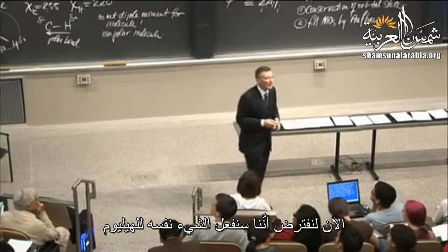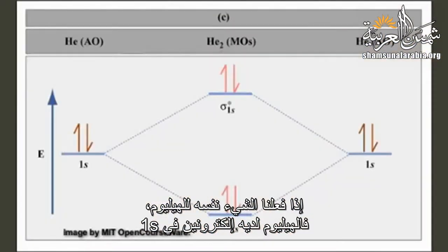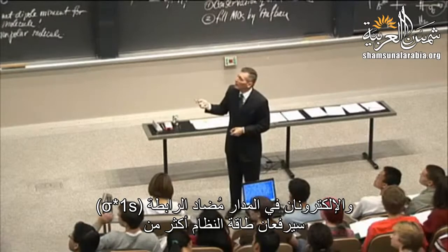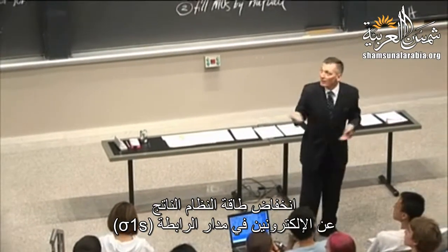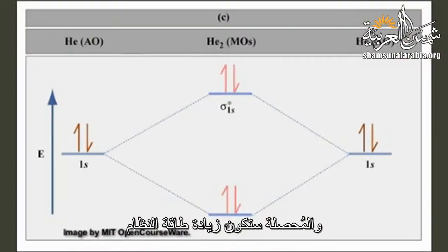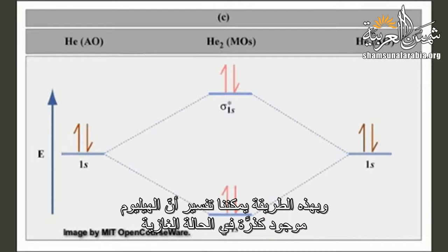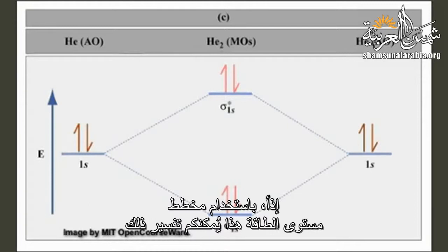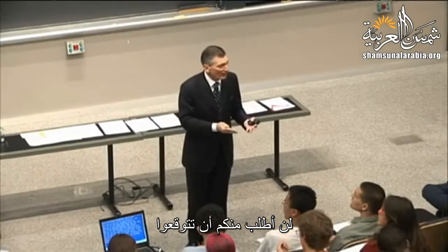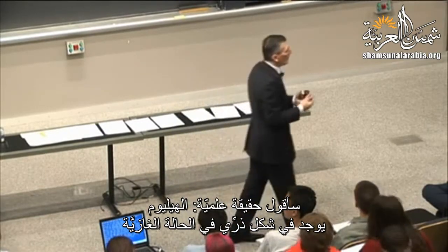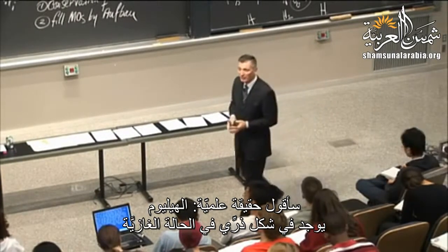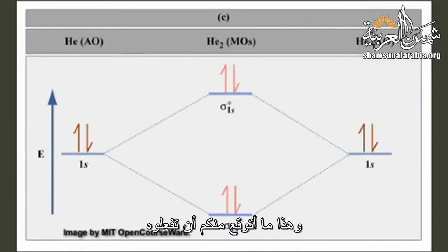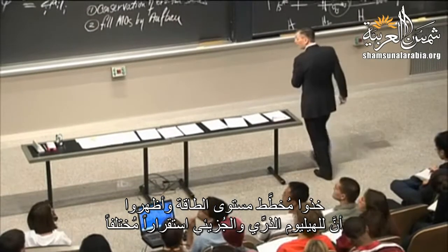If we do the same analysis for helium, helium has two electrons in 1s, so He2 would have four electrons — two going into the bonding orbital and two into the antibonding. The two in the antibonding raise the energy of the system more than the two in bonding decrease it, giving a net increase in energy. This rationalizes why helium exists as the atom in the gas phase — you don't see He2 gas molecules. Using energy level diagrams, you can rationalize this difference in stability.